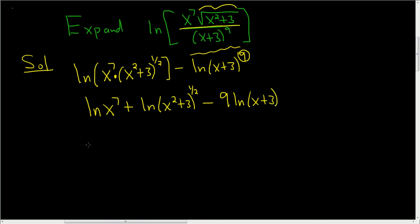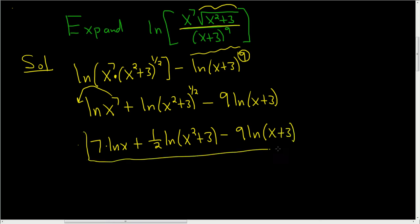To finish, we'll just use the power rule twice. So this is 7 times the natural log of x. You just take the 7 and put it in the front, plus 1 half times the natural log of x squared plus 3 minus 9 times the natural log of x plus 3.